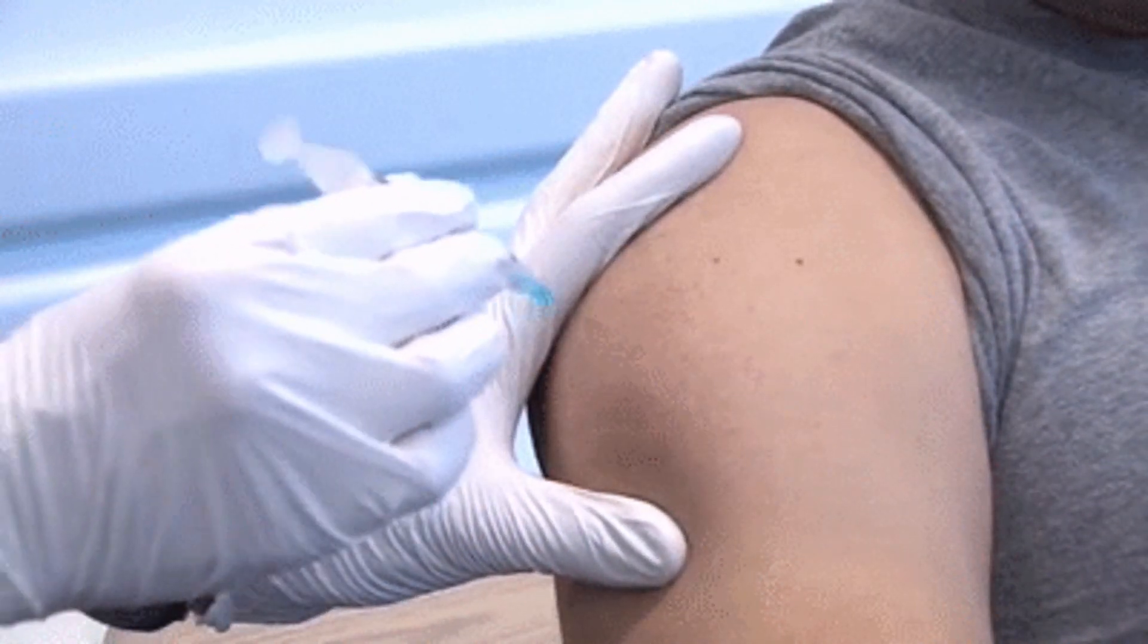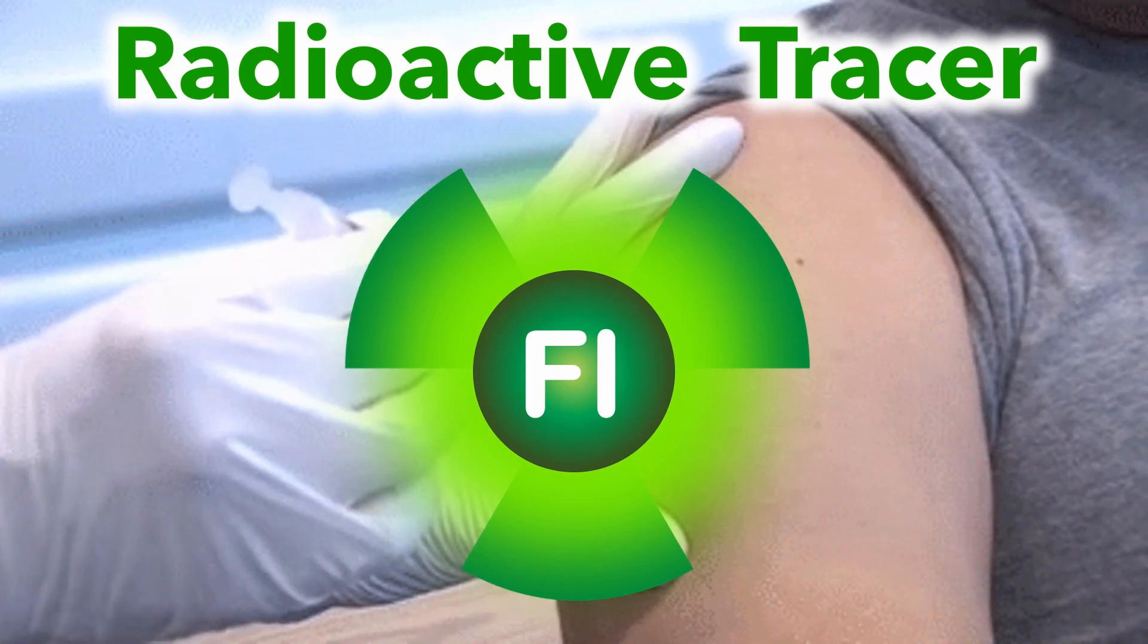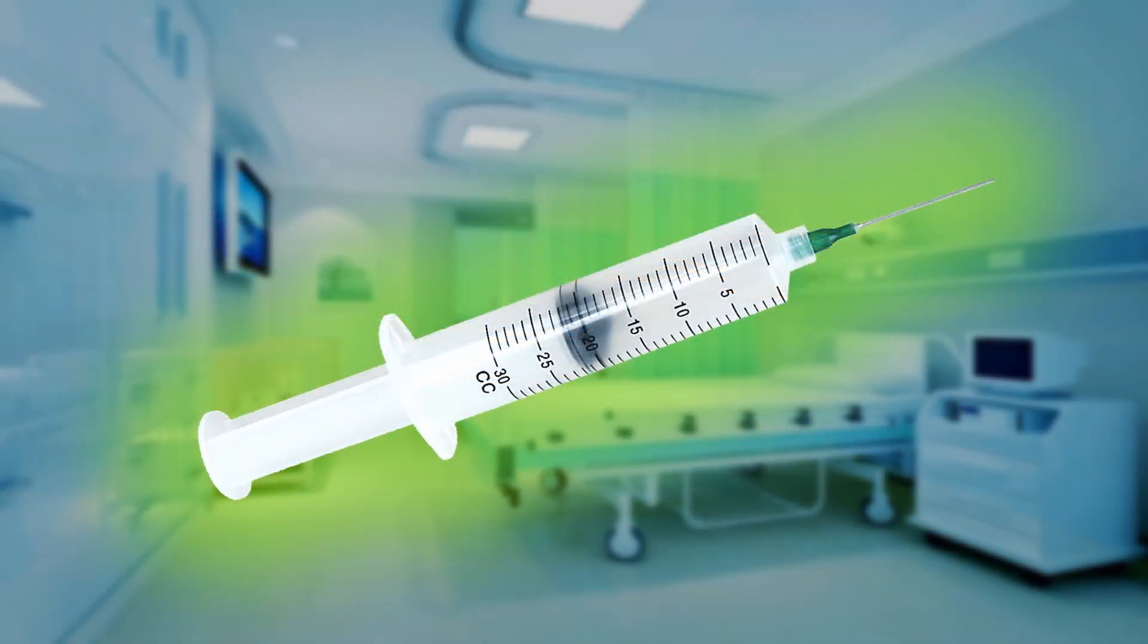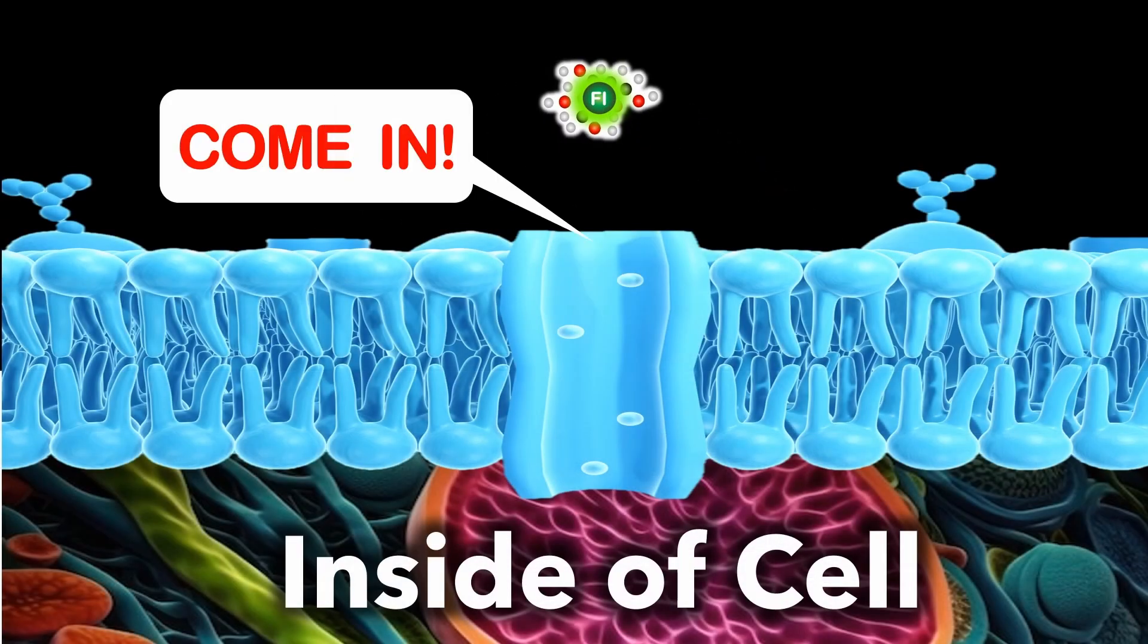Firstly, the patient is injected with a radioactive substance called a tracer, such as fluorine-18, which spreads into the bloodstream. The radioactive fluorine atoms are disguised as sugar molecules to trick cells into letting it inside.